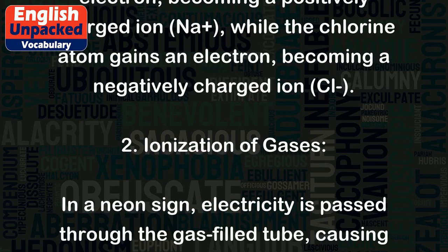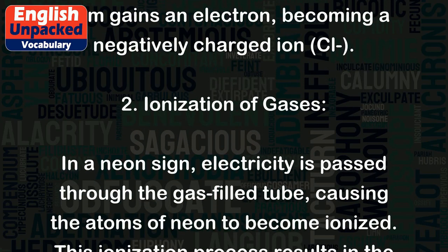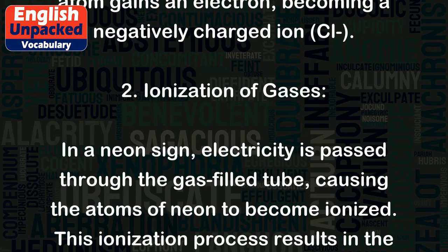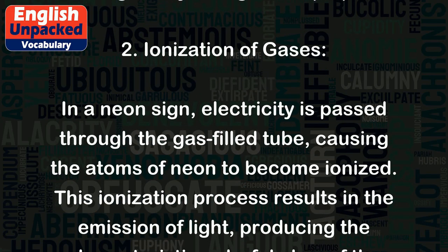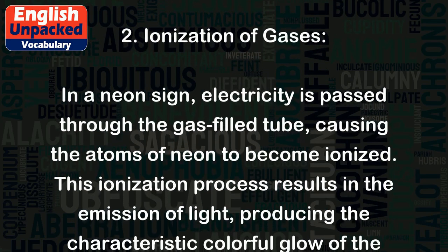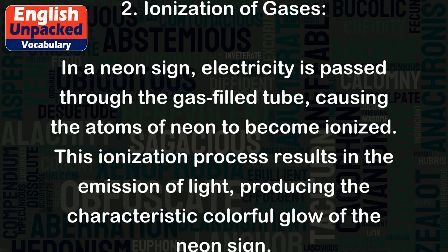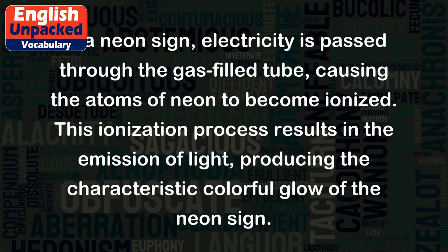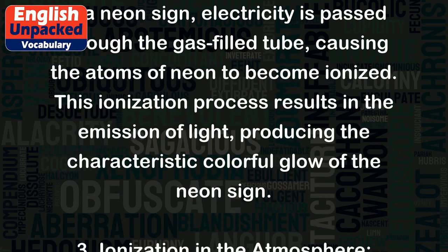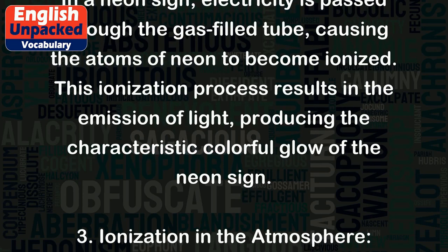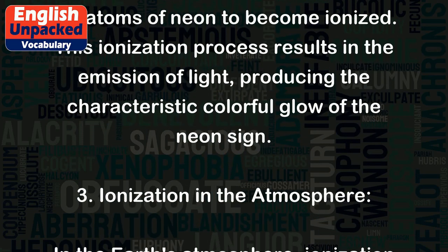Example 2: Ionization of gases. In a neon sign, electricity is passed through the gas-filled tube, causing the atoms of neon to become ionized. This ionization process results in the emission of light, producing the characteristic colorful glow of the neon sign.